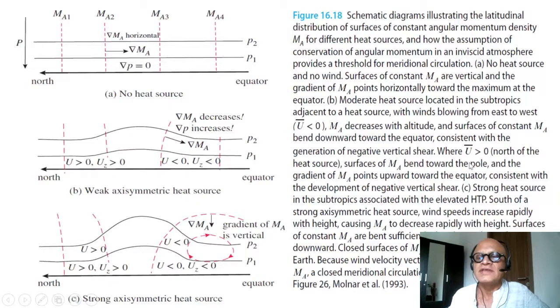In the case of strong heat source where ua is greater than 0, Ma bends towards the pole on the northern side. This is bending towards the equator on one side and towards the pole on the northern side, where you have easterlies ahead and westerlies behind.